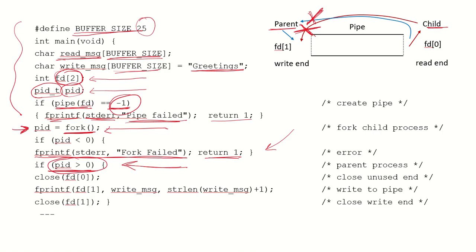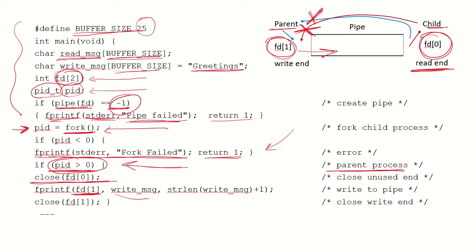If PID is greater than 0 we are in the parent process environment. Since we don't want the parent to read from the pipe, and the read end is defined by FD0, we close FD0 for the parent. Then we use FD1 to write into the pipe, using the character array containing our message and the length of the message. After writing into the pipe, if no further communication is needed, we close the write end by calling close(FD1).